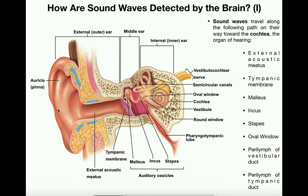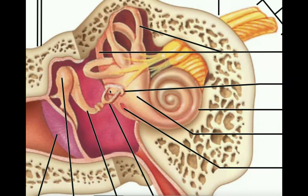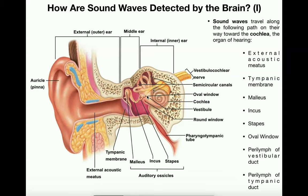As a brief review: sound waves enter the ear and travel through the auditory canal, also called the external acoustic meatus or external auditory canal. Those sound waves cause vibration of the tympanic membrane, also called the eardrum, which causes vibration of the malleus, then the incus, then the stapes. The stapes has a little plug that covers an oval-shaped hole called the oval window, which leads into the fluids of the cochlea — specifically the perilymph of the vestibular duct.